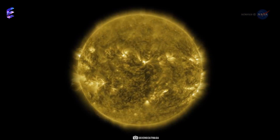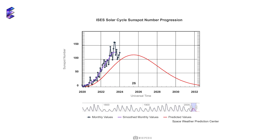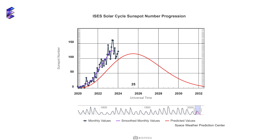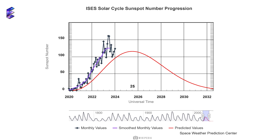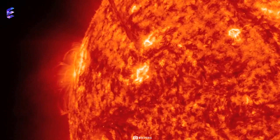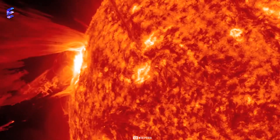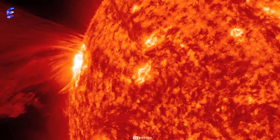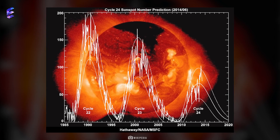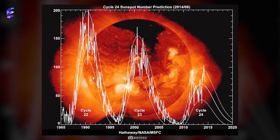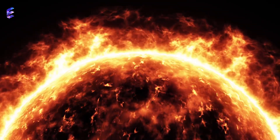Since the 1700s when people started keeping track of the Sun's activity, we're currently in solar cycle 25, which is expected to peak in October 2024. Solar cycle 24 peaked in April 2014 with 114 sunspots, much lesser than the general average of 179 sunspots during the peak, making solar cycle 24 the weakest of the century.